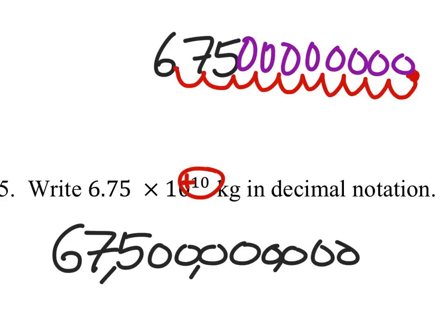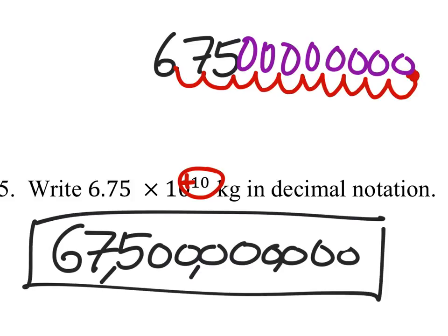And we can separate the place values with some commas. And that would be it, as long as that looks like a 6. There we go.